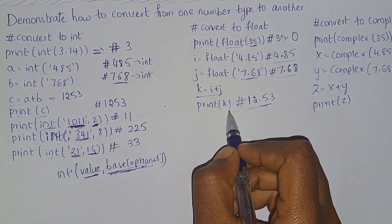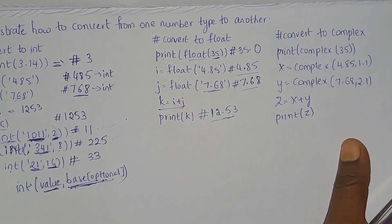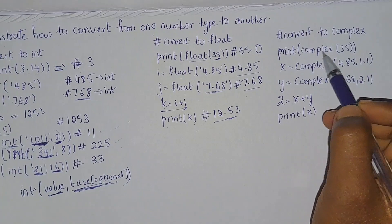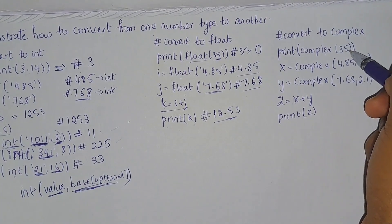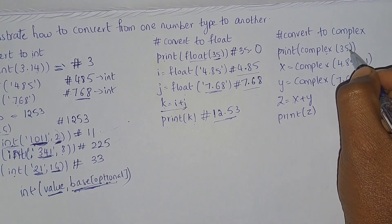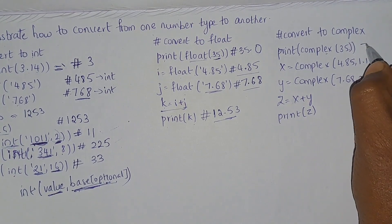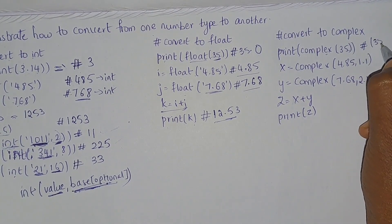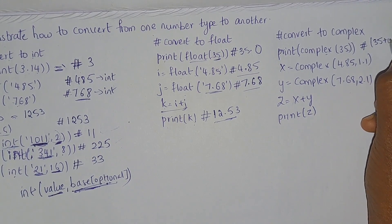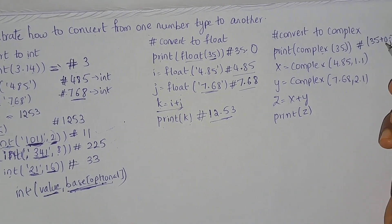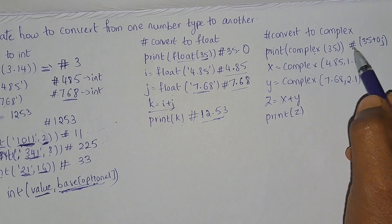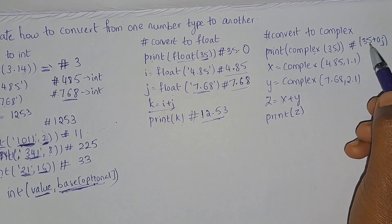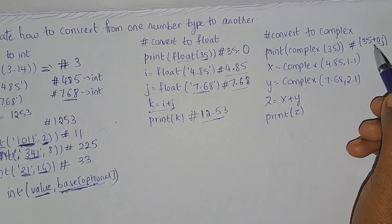The resulting value of k will be 12.53 from the addition of those two numbers. Now converting to complex: if you print complex(35), we haven't provided any imaginary part, so it will be considered as 0 and you will get the output as 35+0j.